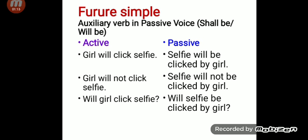Shall be and will be are the auxiliaries that you have to use in passive form. Now consider the active sentence: Girl will click selfie. Here, girl is the subject, will is an auxiliary verb, click is the main verb, and selfie is the object. So it is a future simple tense sentence.